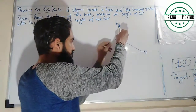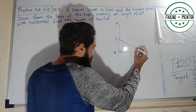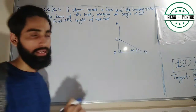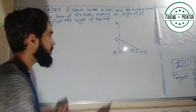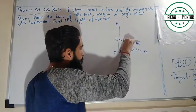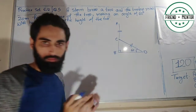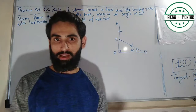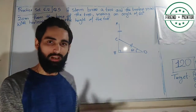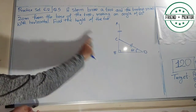What happened: the whole tree was standing, then it broke from the middle — not from the base — and fell. The angle it made with the ground is 60 degrees. The part that fell is what we need to track. The top of the broken tree rested 20 meters from the base.